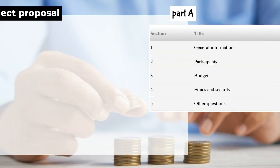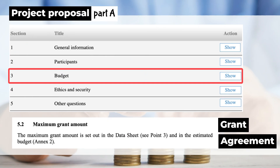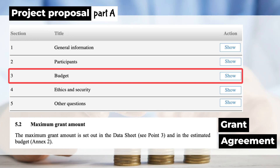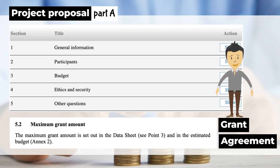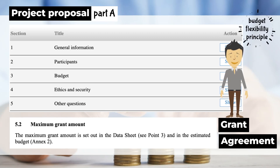The project budget is an integral part of the project proposal. If your project succeeds, the budget becomes an annex to the grant agreement, setting out the maximum grant amount you may not exceed. However, the budget flexibility principle makes it possible to transfer the budget between budget categories.